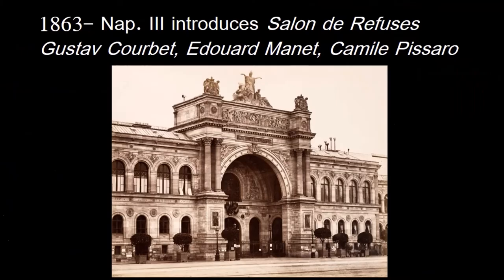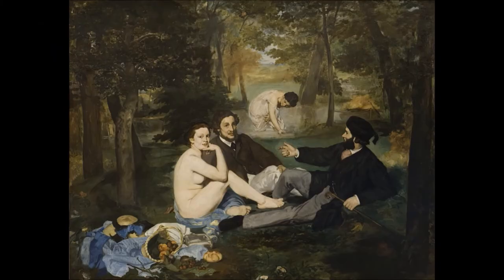Manet himself was very good friends with most of the Impressionists, but did not show in the Impressionist exhibition. He was more in favor of working with the Salon. The first big public splash from Manet is when Napoleon III created the Salon of Refused Works — there were so many refused works that year that Napoleon III started a show just based on them. This is where we see Manet's very famous Luncheon on the Grass first shown to the public.